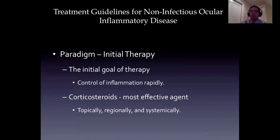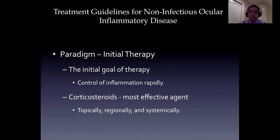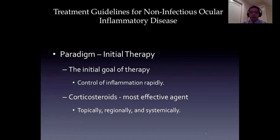Corticosteroids are the most effective agents with a few exceptions. Those exceptions probably include cases where you have explosive onset ocular Behcet's disease. In those cases, we treat with anti-TNF therapy, usually with Remicade infusions if available. Remicade is infliximab, a monoclonal antibody directed against tumor necrosis factor alpha. This is widely available in Western Europe and the United States, and in some portions of East Asia, but may be difficult to obtain in sub-Saharan African countries. Corticosteroids are typically used topically, regionally, and systemically.